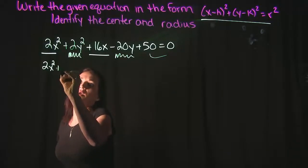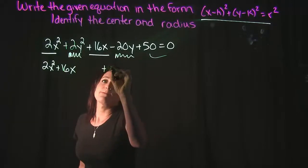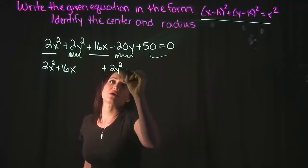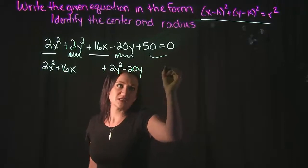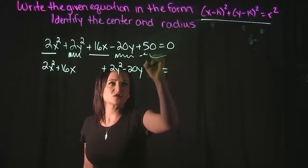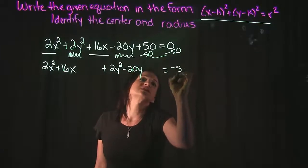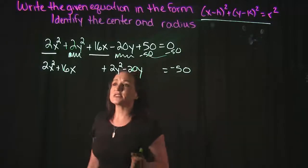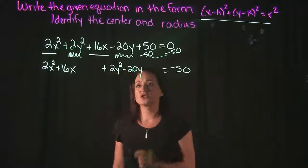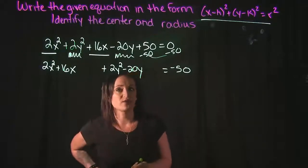I'm going to take 2x² + 16x, and I'm going to leave a space, plus 2y² - 20y, and I'm going to leave a space. And if I move this 50 over to the other side, I'm going to subtract it to both sides. So this is now going to equal to -50. And what I need to do is I'm going to complete the square for each one of these here.